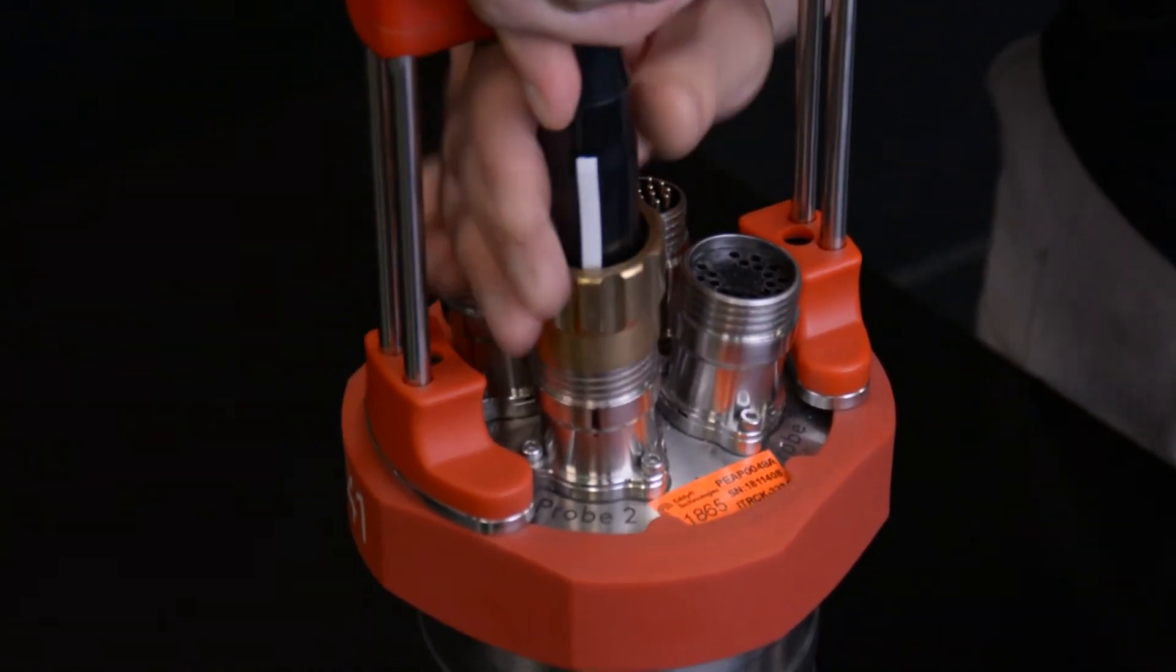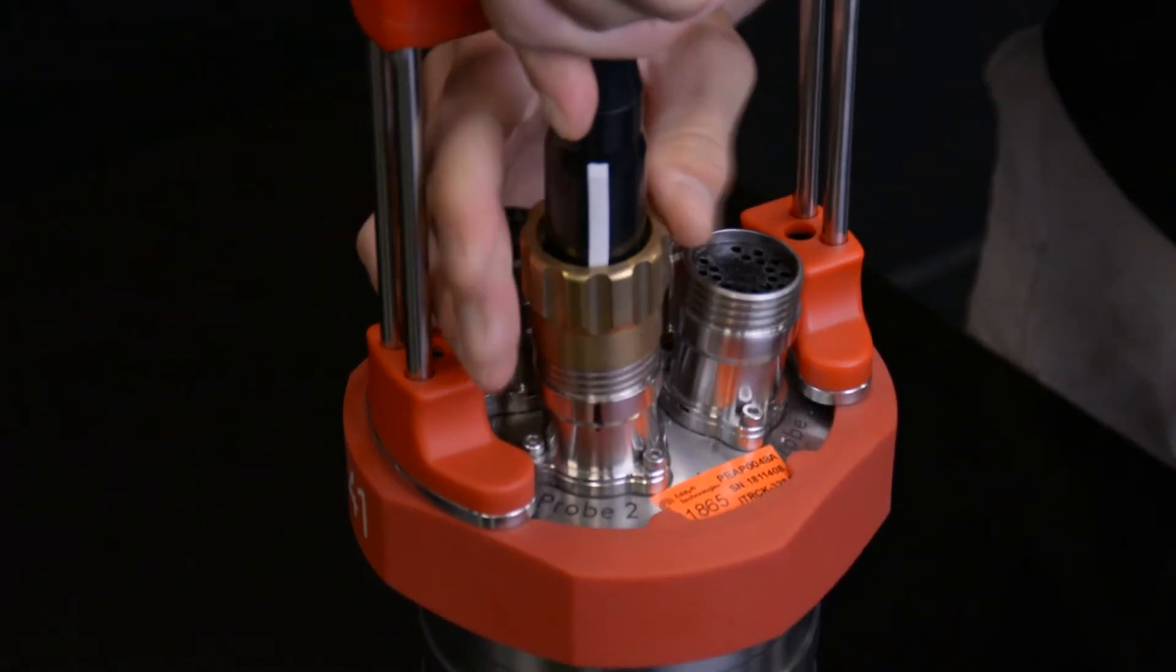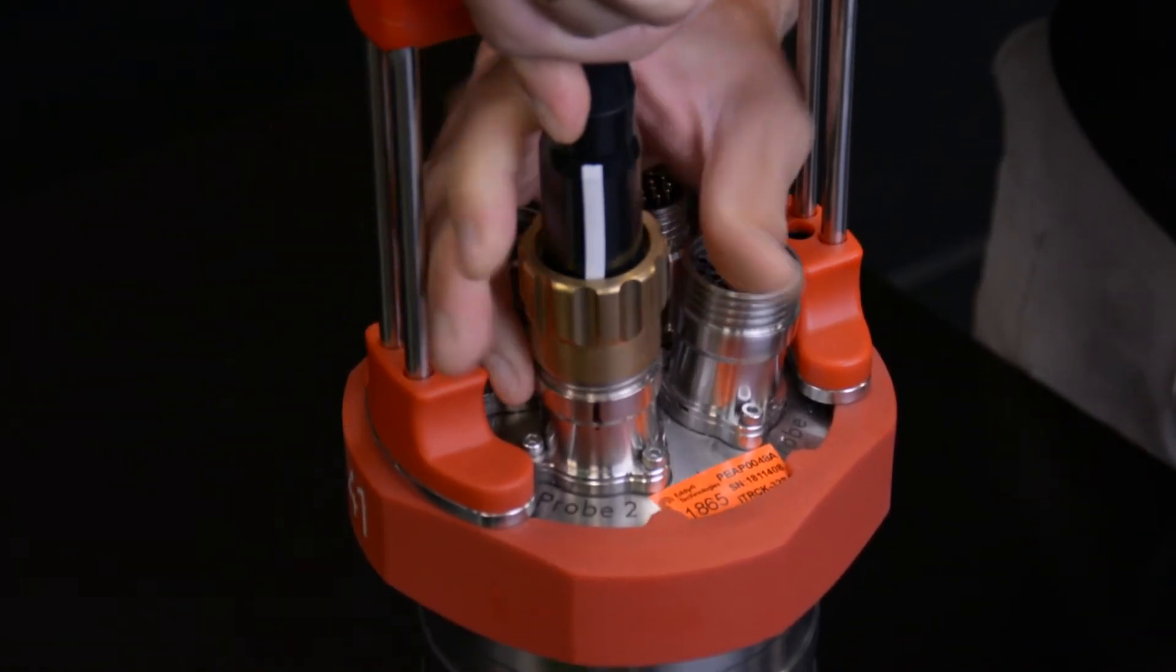The locking collar can be lifted to ensure the two halves are mated fully together. Screw down the locking collar to secure the connection.